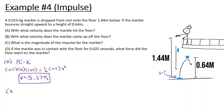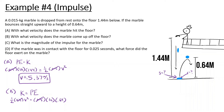Part B: with what velocity does the marble come up off the floor? It bounces to a height of 0.64 meters. Using energy conservation again — kinetic energy equals potential energy: one-half mv squared equals mgh. Masses cancel, so solving: the square root of 2 times 10 times 0.64 gives 3.58 meters per second. So the marble comes up off the floor at positive 3.58 meters per second.